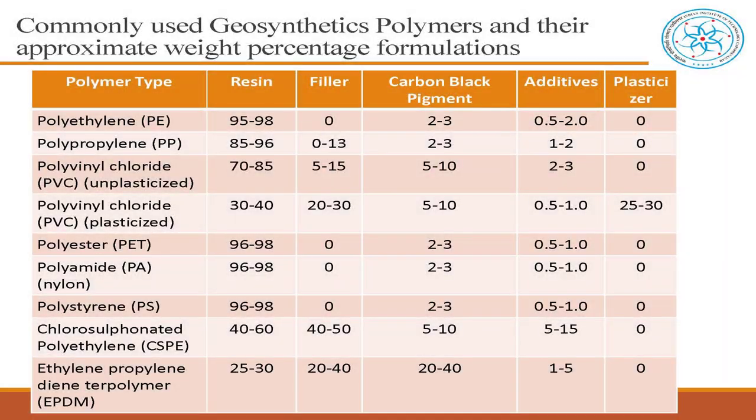In PVC there is a filler and a plasticizer. You can add fly ash to make PPC, but only up to a certain percentage depending on the grade. CSPE and EPDM are actually synthetic rubbers — we do not normally use them. Polystyrene (Thermocol) can be used in block form to fill embankments on very soft soils, but we are not dealing with that — it does come under the geosynthetics family though.